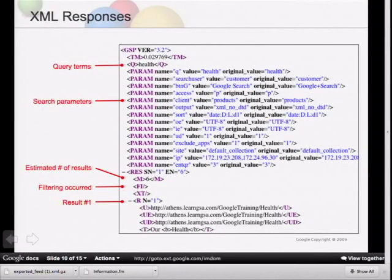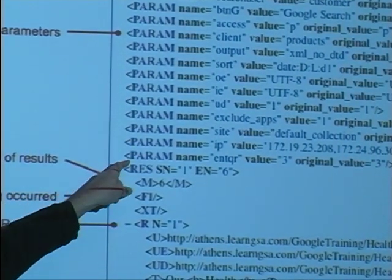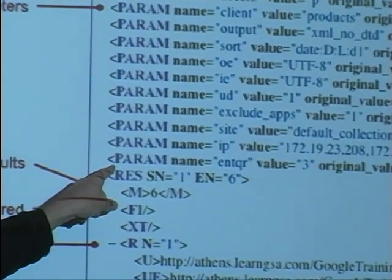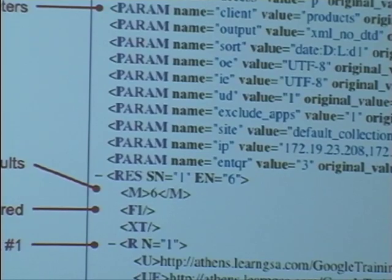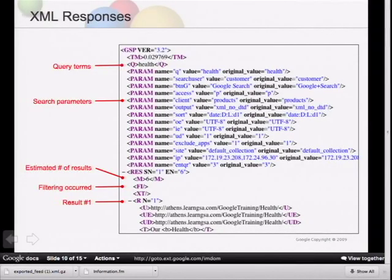Now let's talk about some of the XML that comes back. The very first thing you'll see is the query terms that were sent over in your URL — this is valuable especially if you're sending custom parameters for processing. Next you get the estimated number of results in the M tag — look in M to see how many results you're expecting. This is useful when building navigation that shows 'next' links or page numbers 1, 2, 3, 4, 5 — you need to know how many page links to include and when to stop showing the next link.